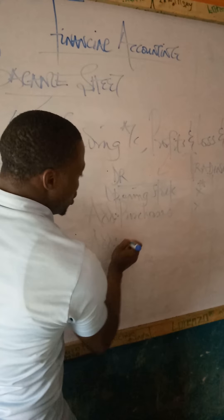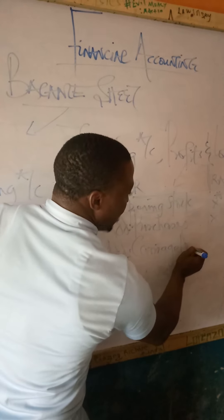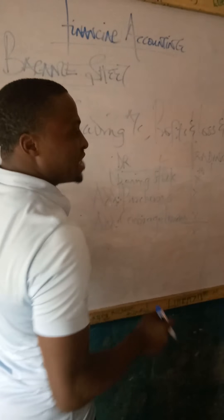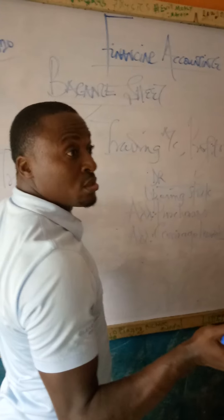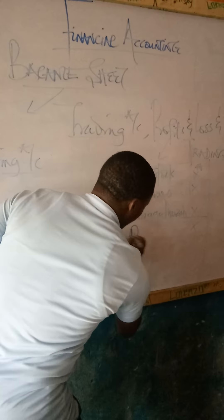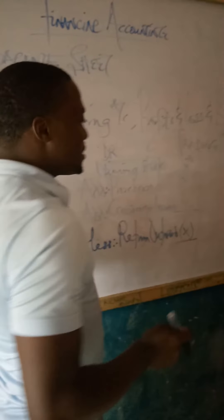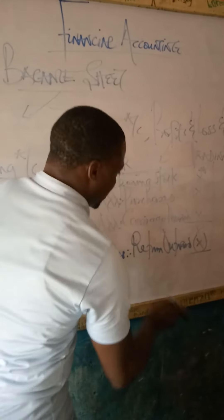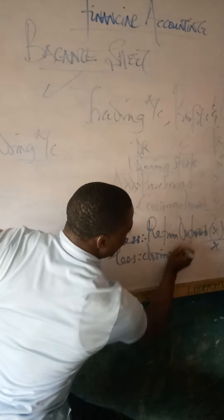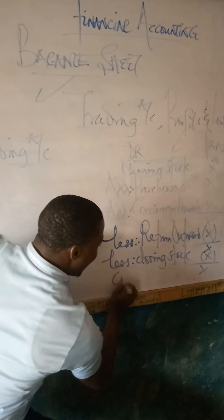If there is carriage inward, you add it — that is the cost incurred on goods you purchased after you discover that the goods are fine. You add carriage inward to your purchases. After adding everything together, if there is returns outward, you deduct returns outward. Deducting returns outward gives us the cost of goods available for sale. Then you deduct your closing stock, and that will give us cost of goods sold.